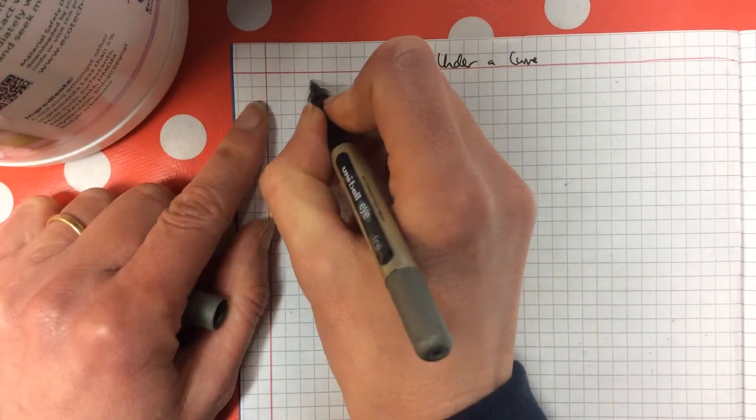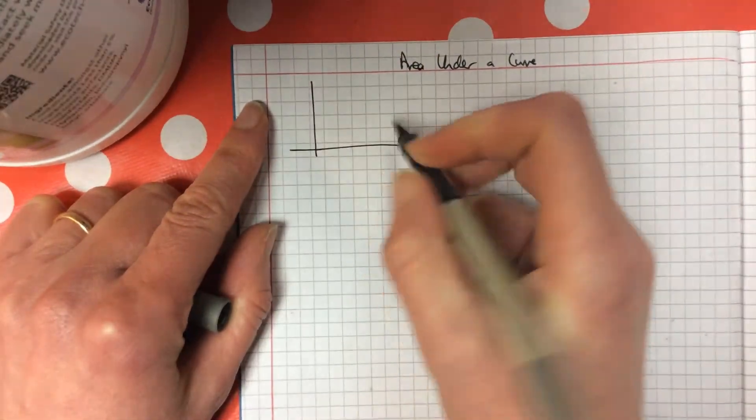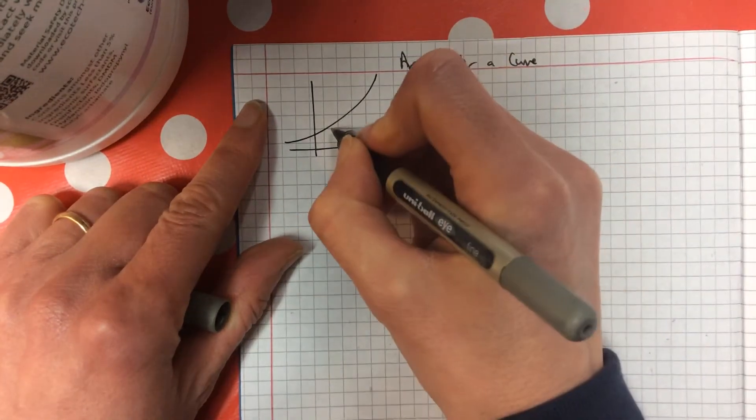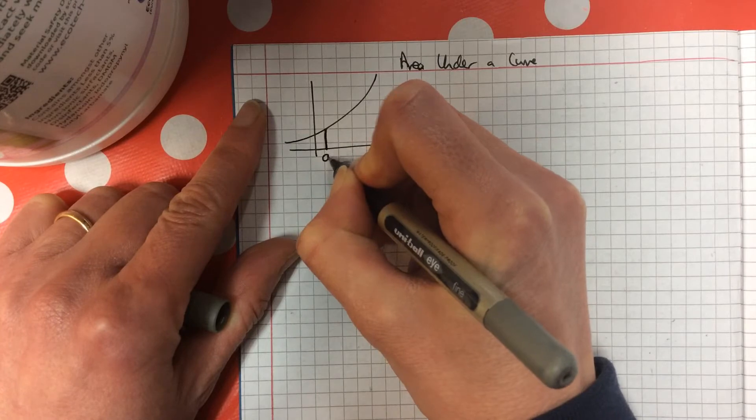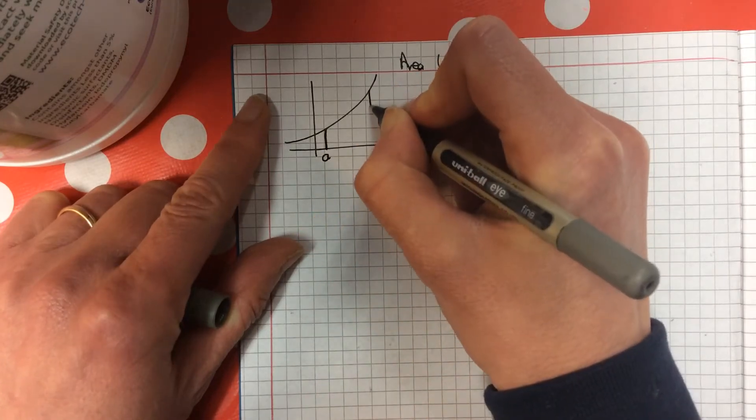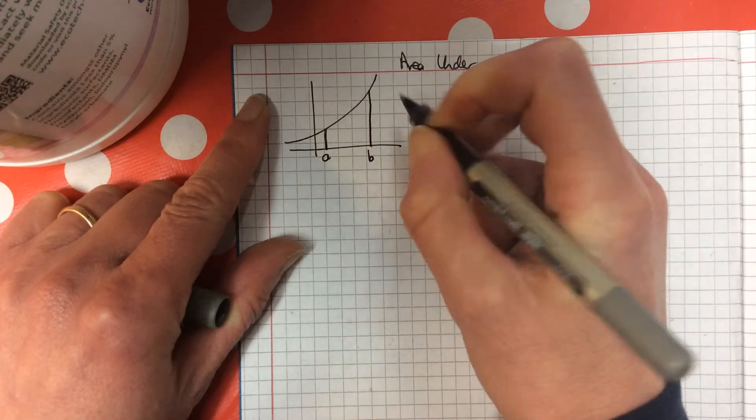I'm going to have a look at area under a curve. For area under a curve, you have to have a curve, obviously. And you see I'm dropping a straight line down there? That's x equals a. And here's another straight line being dropped, and that's x equals b.